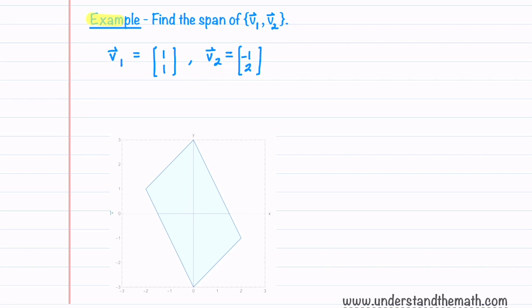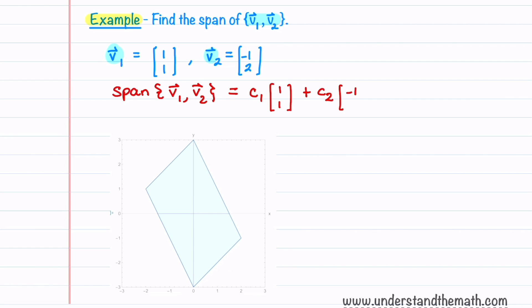Let's look at an example where we find the span of two vectors. We're given v1 equal to (1, 1) and v2 equal to (-1, 2). The span of v1 and v2 is all the linear combinations of these vectors, which equals c1 times (1, 1) plus c2 times (-1, 2). This span is the plane shown here. This plane passes through the origin since c1 and c2 can both be set equal to 0.